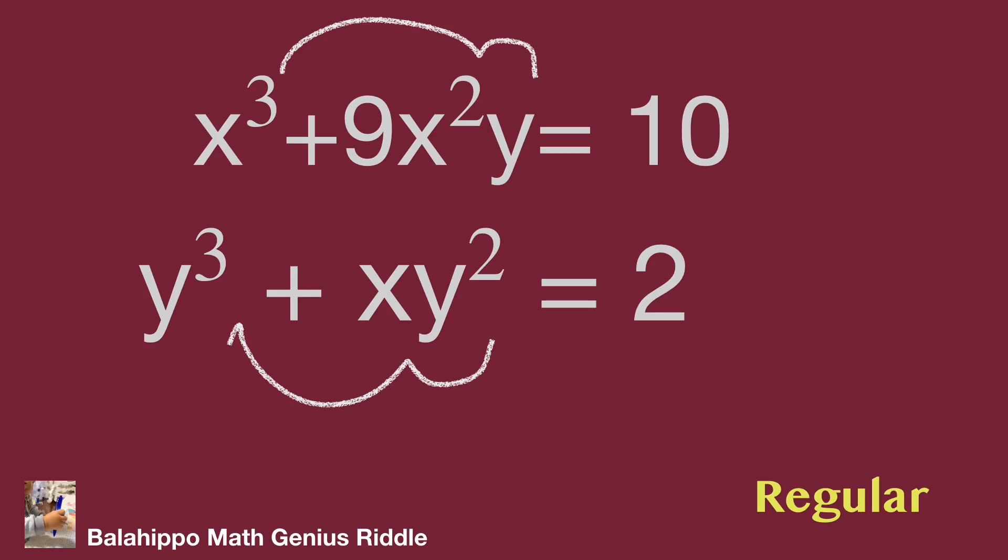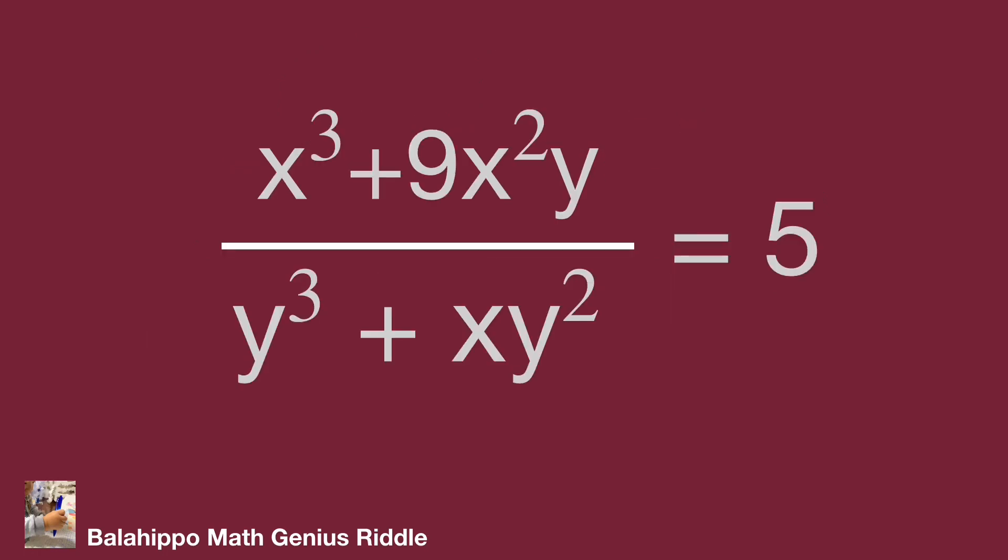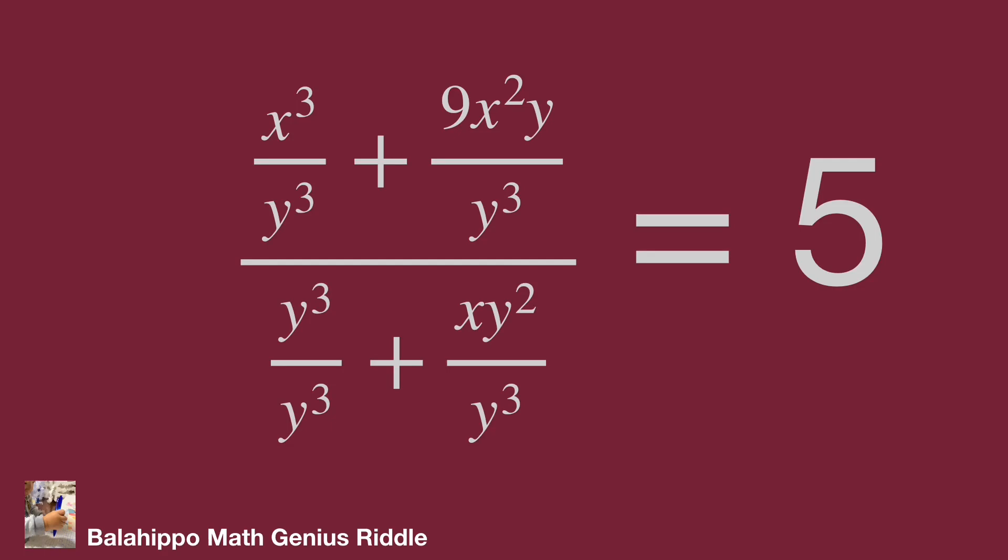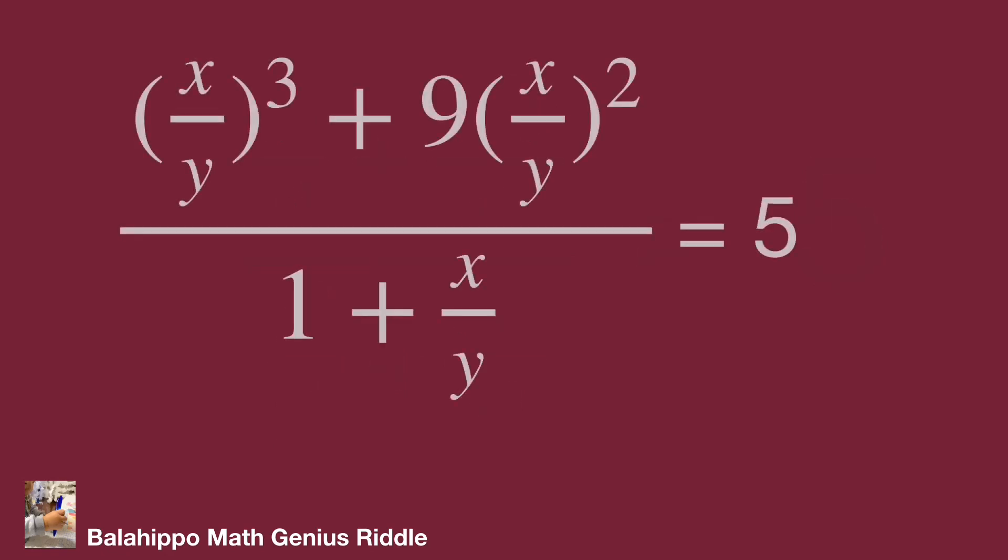Therefore, if I utilize the division to generate new information, the first equation divided by the second equation: we have x cubed plus 9x squared y over y cubed plus xy squared equals 5. Next, divide by y cubed in the numerator and denominator of this fraction. Simplify it and generate x over y as one single item. So we have quantity x over y cubed plus 9 times quantity x over y squared over 1 plus x over y equals 5.